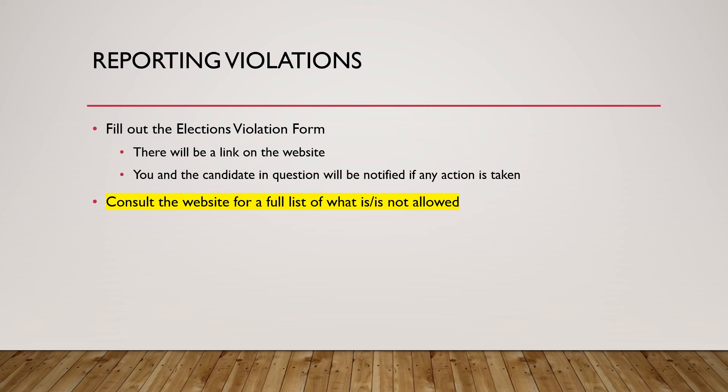If you want to report a rule violation, go to the SA government website and fill out the elections violations form. That form will ask what rule violation took place, who the candidate was, and will allow you to upload pictures or documentation. After I receive those materials, I'll consult with the Election Violations Committee on whether it is in fact a rule violation. If it is, the candidate will be notified and receive a set amount of penalty points and possibly a sanction.